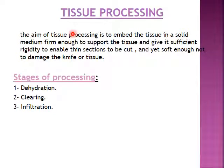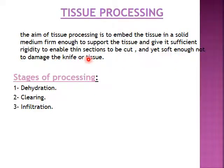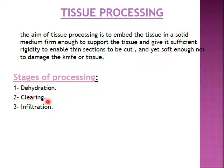The second process of paraffin embedding technique after fixation is tissue processing. The aim of tissue processing is to embed the tissue in a solid medium firm enough to support the tissue and give it sufficient rigidity to enable thin sections to be cut, yet soft enough not to damage the knife or tissue. In this process, we place the tissue inside paraffin wax to enable cutting without damage by the microtome knife. Stages of processing include dehydration, clearing, and infiltration.